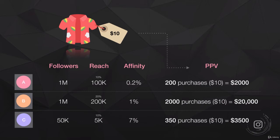Here's a quick example comparing three Instagram accounts, each trying to sell a ten-dollar t-shirt. Account A has one million followers and a reach of 10%, which is pretty standard — so their post reaches a hundred thousand people. Their affinity is quite low at 0.2%, meaning of those hundred thousand people, 0.2% purchase — that's 200 purchases, which equals two thousand dollars.